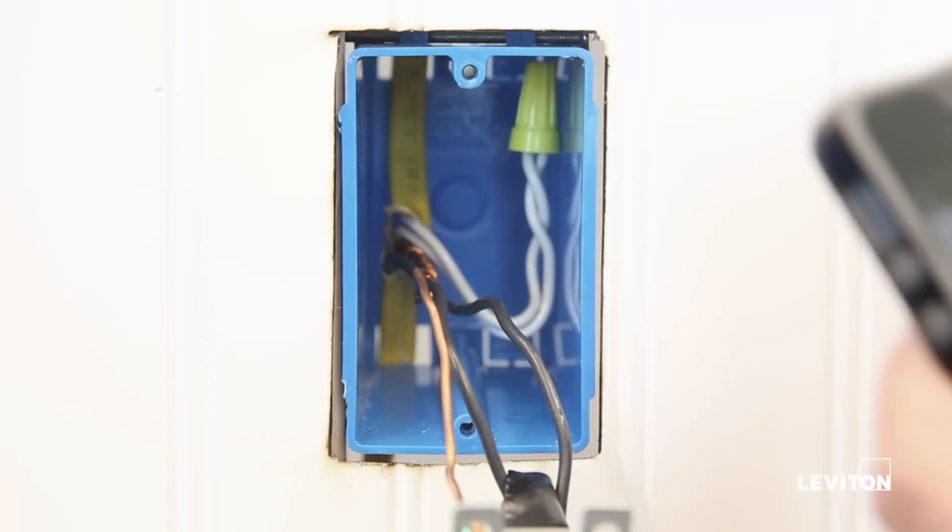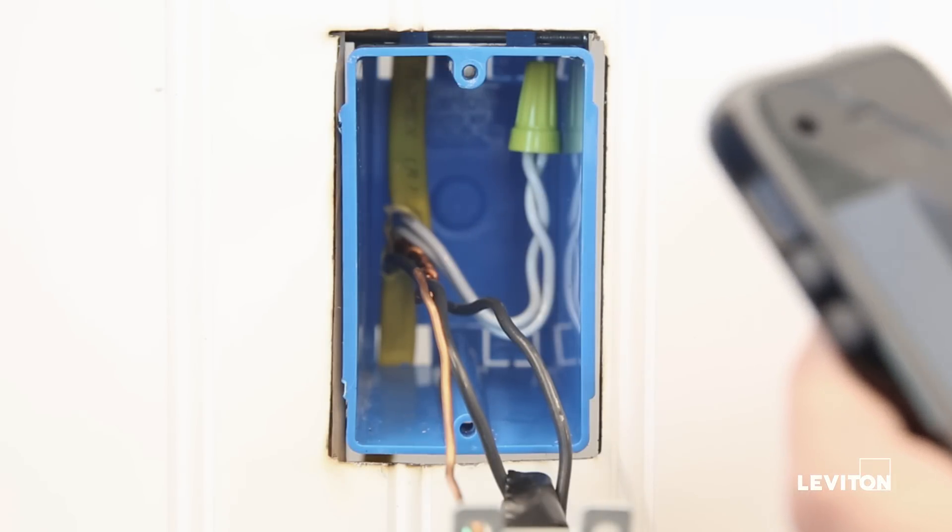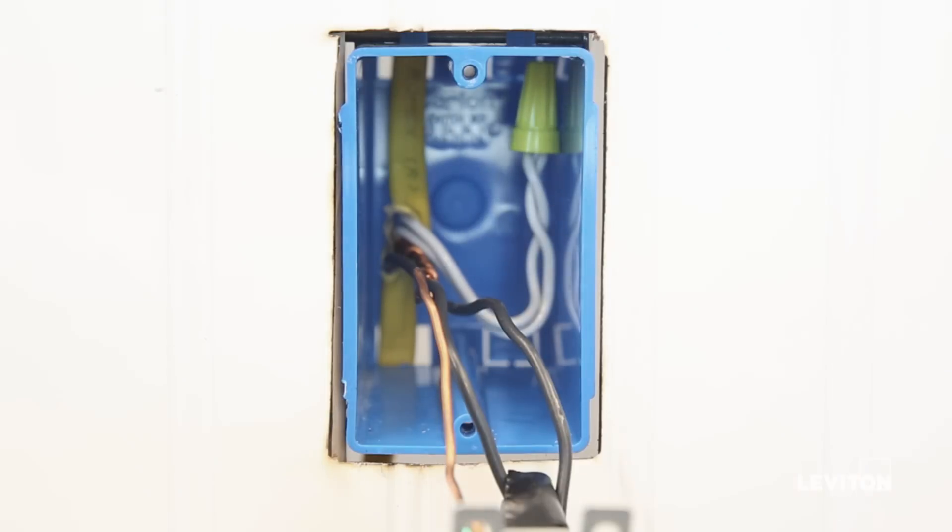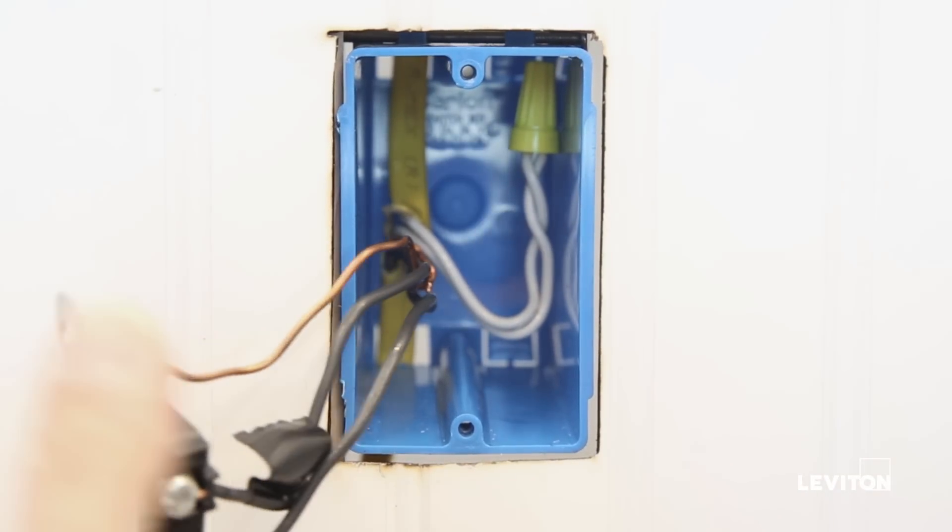Prior to disconnecting the switch, it's a good idea to take a cell phone picture of your existing wiring. If you encounter difficulty during the installation, the picture can be referenced in the future or sent to the Leviton Technical Support Department. Move the existing switch to the side so we can see fully into the wall box and begin to identify the wiring in this location.